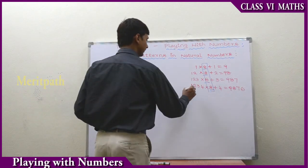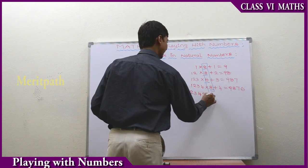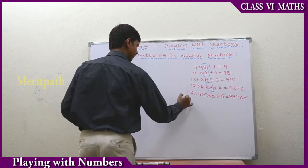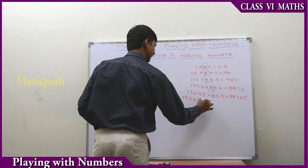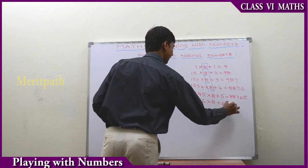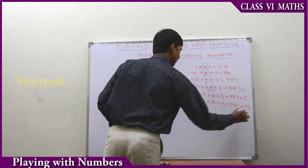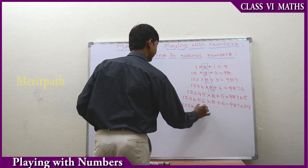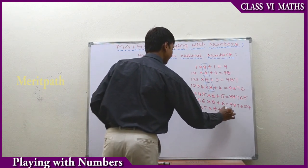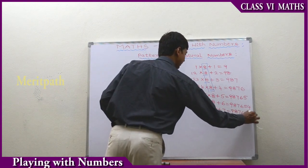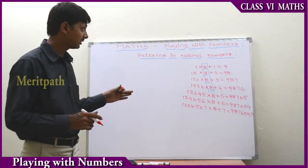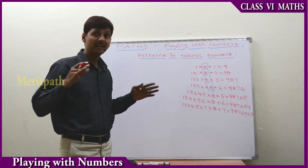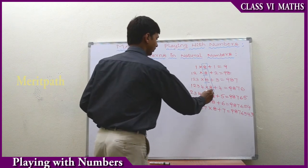Let's see the next pattern. The pattern is 1, 2, 3, 4, 5 into 8 plus 5 is equal to 9, 8, 7, 6, 5. The next number: 1, 2, 3, 4, 5, 6 into 8 plus 6 is equal to 9, 8, 7, 6, 5, 4. Then 1, 2, 3, 4, 5, 6, 7 into 8 plus 7 is equal to 9, 8, 7, 6, 5, 4, 3. In this manner we can write the numbers — observe the pattern. So let's go to the next pattern.